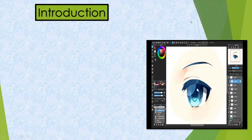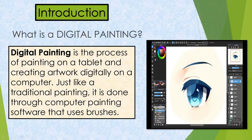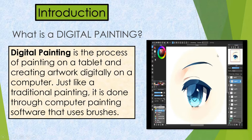Now let us proceed to the introduction of our new lesson. What is a digital painting? Digital painting is the process of painting on a tablet and creating artwork digitally on a computer. Just like traditional painting, it is done through computer painting software that uses brushes. An example application is Adobe Photoshop.